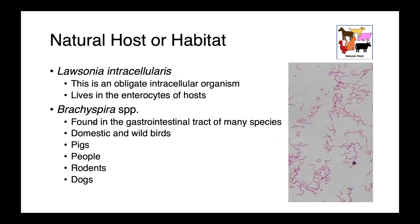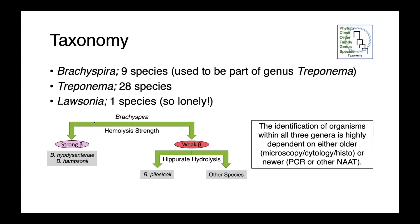Lausonia intracellularis is an obligate intracellular parasite found within the enterocytes — the intestinal epithelial cells — of host species. Brachyspira species are found in the gastrointestinal tract of many different animals, including domestic and wild birds, pigs, rodents, dogs, and even people. Treponema is primarily a pathogen of the ruminant foot. We have nine species of Brachyspira currently recognized; these organisms used to be included within the genus Treponema, so be aware of that in older literature. Treponema has 28 species, and Lausonia has only one: Lausonia intracellularis.